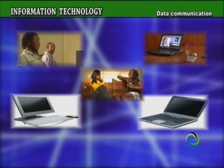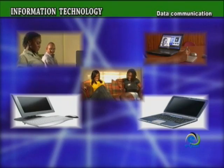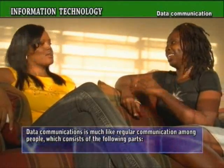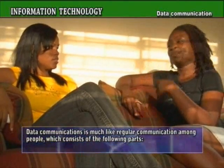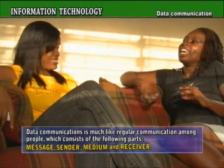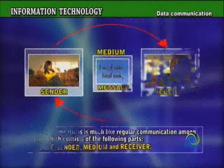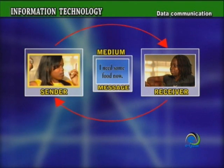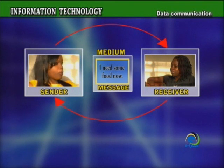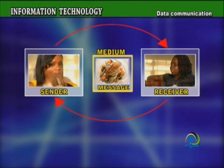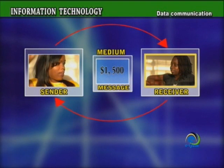What is Data Communications? Data Communications is much like regular communication among people, which consists of the following parts: the sender, which is the person who has the idea or message and usually begins the conversation; a message, which is the information or idea to be shared; a medium, which is the method or channel used to transfer the message; and the receiver, which is the person for whom the message is intended.